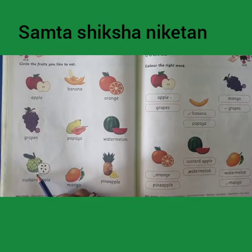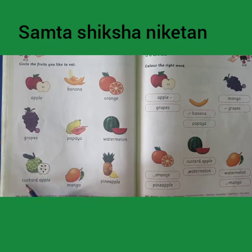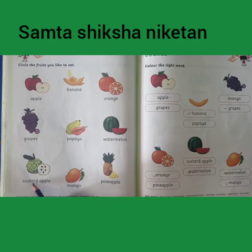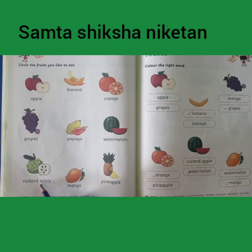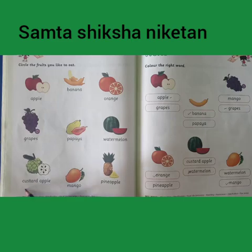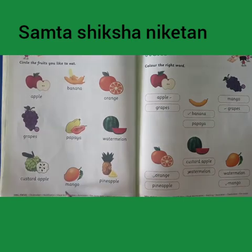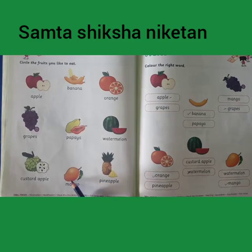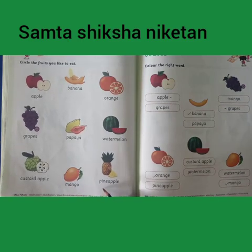Now, this is custard apple. What is the spelling of custard apple? C, U, S, T, A, R, D — custard. E, double P, L, E — apple. Custard apple. Now next is mango. M, A, N, G, O — mango.